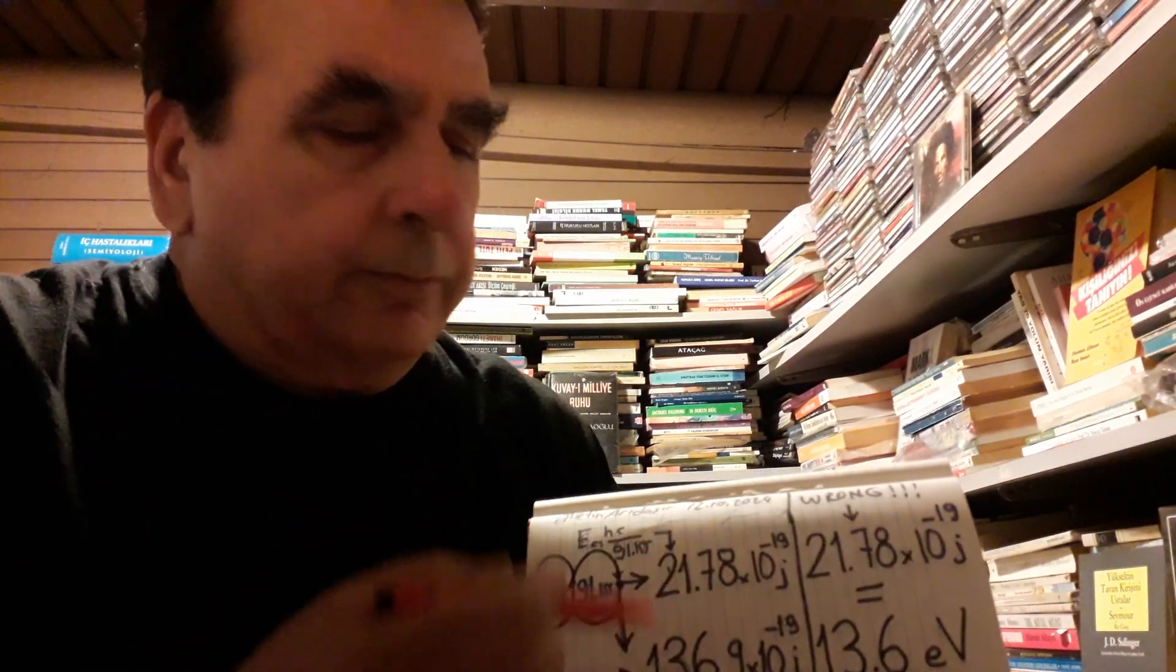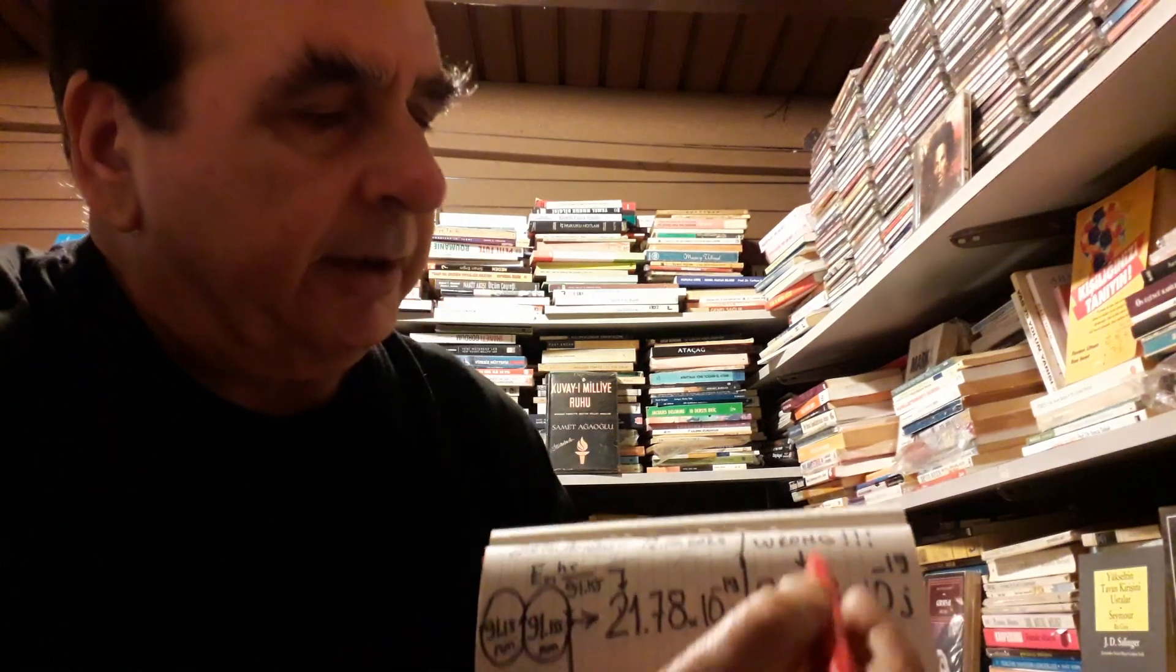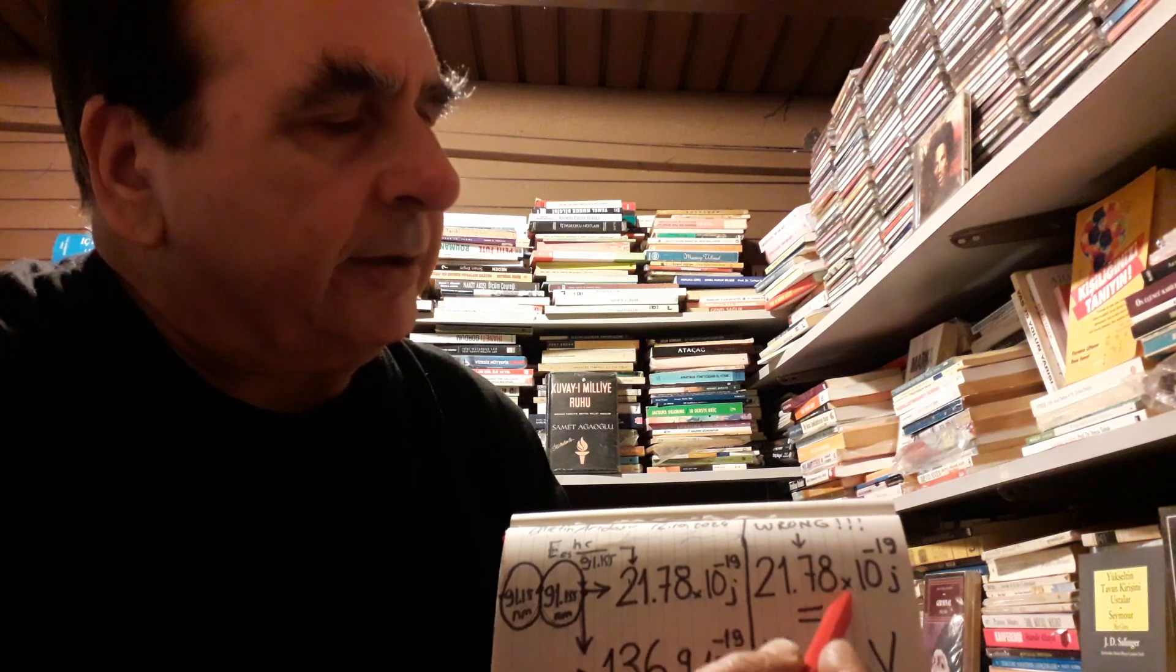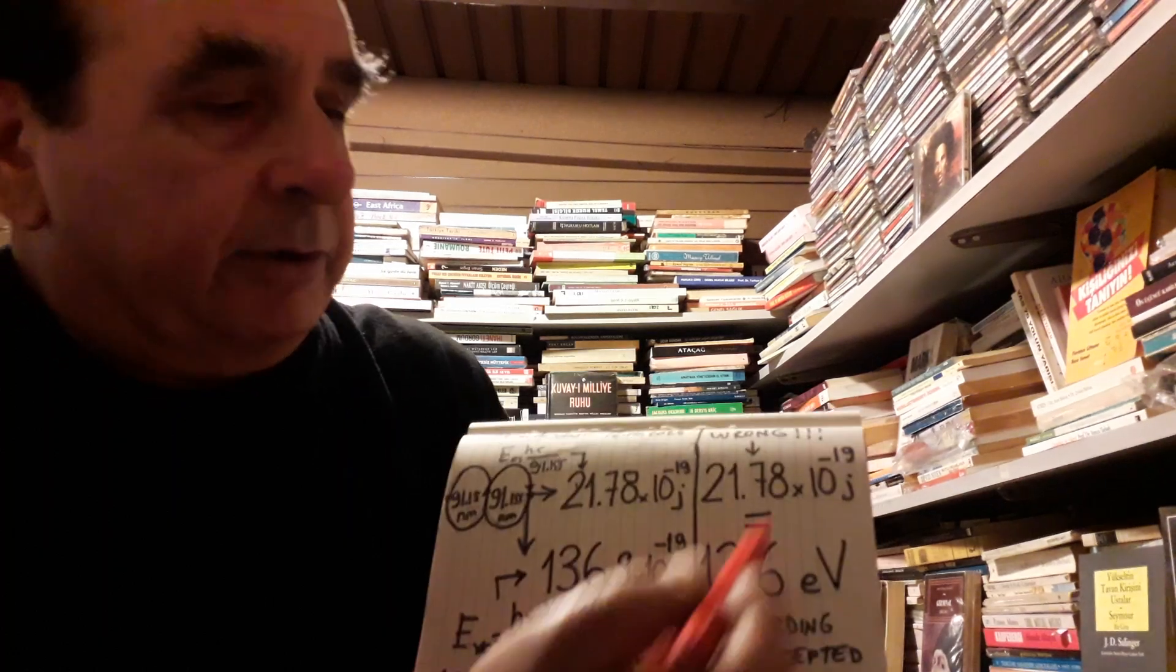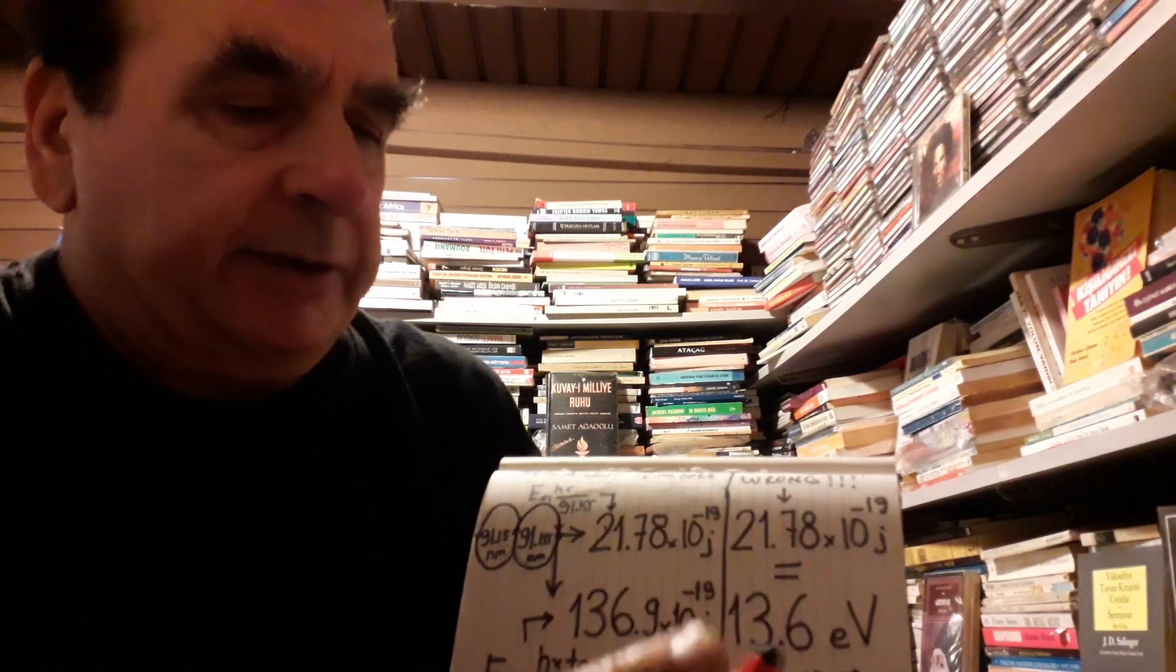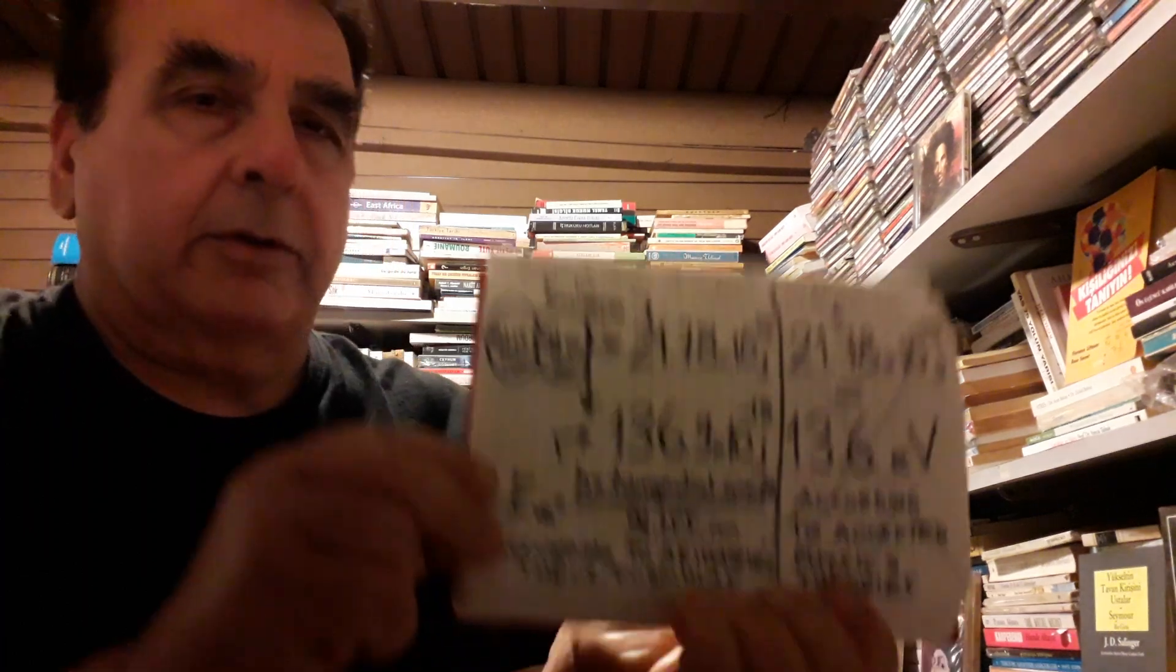Okay, these two values are different values, different and for different energies. But according to physics, 21.78×10^-19 joules equals 13.6 electron volt. According to accepted physics, this is wrong here.